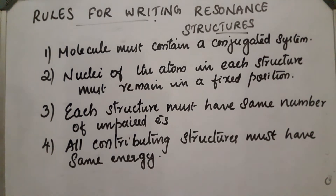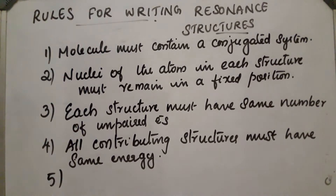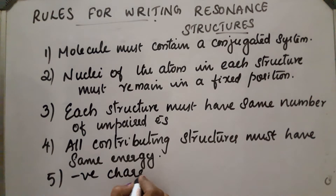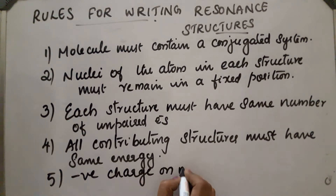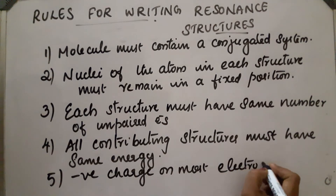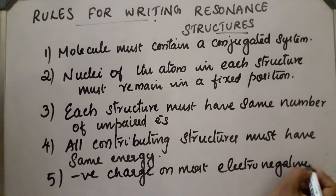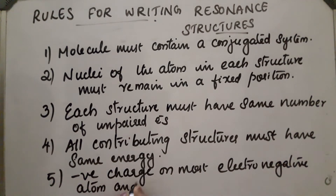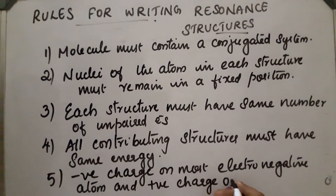Fifth rule: the negative charge will be on the most electronegative atom, and the positive charge will be on the most electropositive atom.